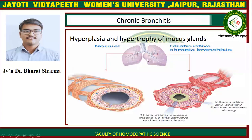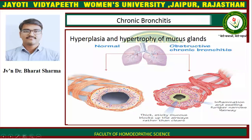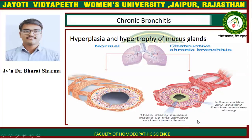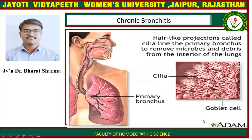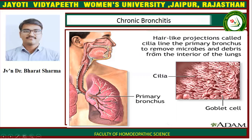Regarding hyperplasia and hypertrophy of mucus glands — here is a diagram of obstructive chronic bronchitis showing inflammation and swelling that further narrows airways, and thick sticky mucus blocks up the airway rather than clearing it. Here is a goblet cell and here is cilia. In normal conditions, hair-like projections called cilia line the primary bronchus to remove microbes and debris from the interior of the lungs. In chronic bronchitis, the cilia are damaged.